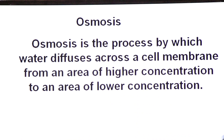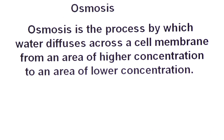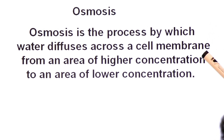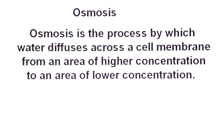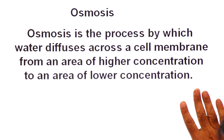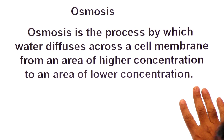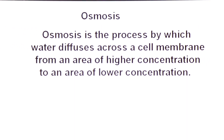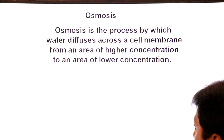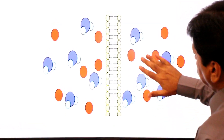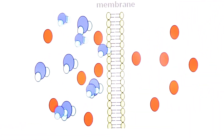Next: osmosis. What is osmosis? Osmosis is the process by which water diffuses across the cell membrane from an area of higher concentration to an area of lower concentration. Water diffuses across the plasma membrane from a more crowded place to a less crowded place.